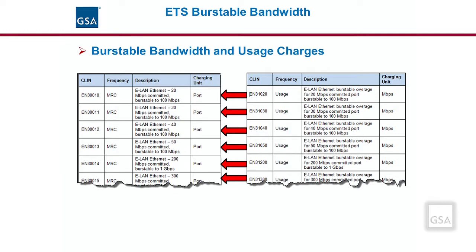The burstable bandwidth capability allows agencies to subscribe to a bandwidth commitment that is less than the full bandwidth of the selected ETS port. The agency gets the committed bandwidth and may burst to the full bandwidth without placing an order or any interruption of service. On the low end there is a 20 Mbps committed burstable up to 100 Mbps, and on the high end there is a 600 Mbps committed burstable up to 1 Gbps, with a number of options in between.